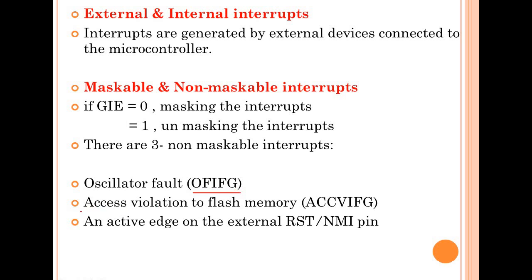The second non-maskable interrupt is access violation to flash memory. This occurs if you are trying to write data into write-protected flash memory, or when a variable tries to access or update memory outside of its memory segment. When this happens, the memory access violation interrupt flag is set. The third non-maskable interrupt is an active edge on the external reset or non-maskable interrupt pin, which restarts your microcontroller and cannot be disabled.